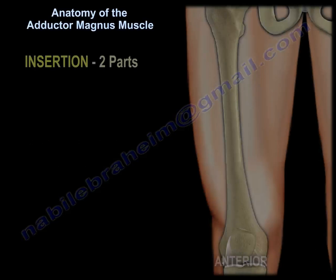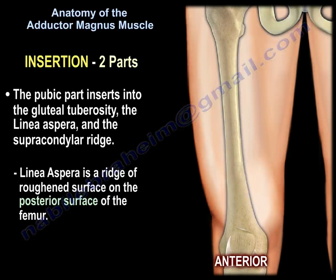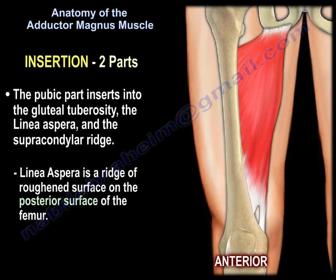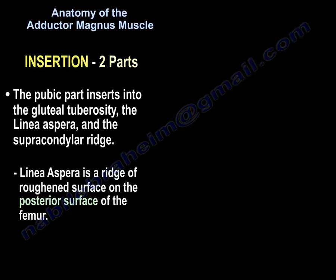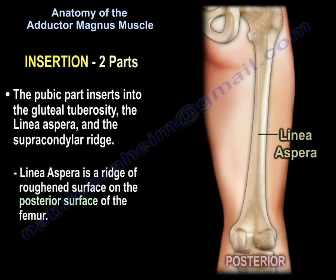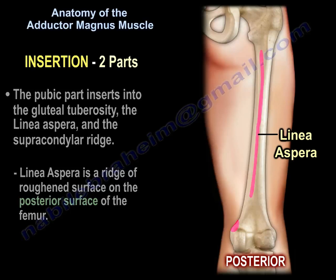Insertion has two parts. The pubic part inserts into the gluteal tuberosity, the linea aspera, and the supracondylar ridge. The linea aspera is a ridge of roughened surface on the posterior surface of the femur.